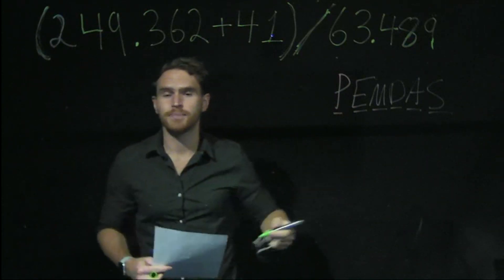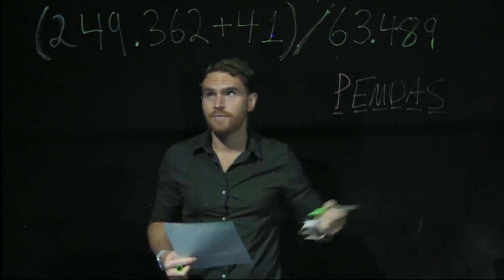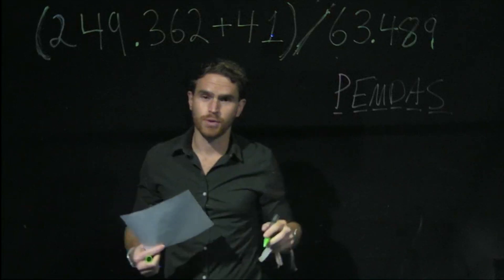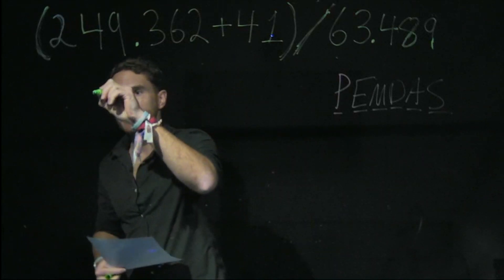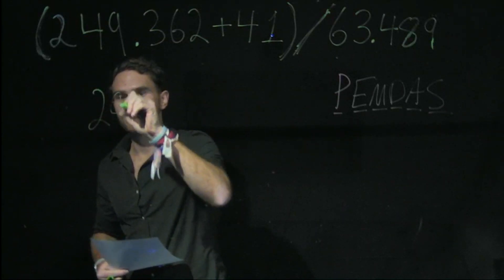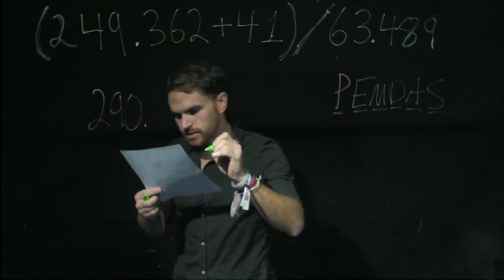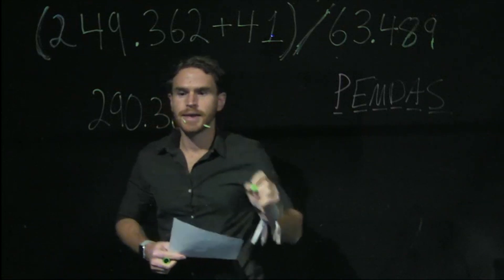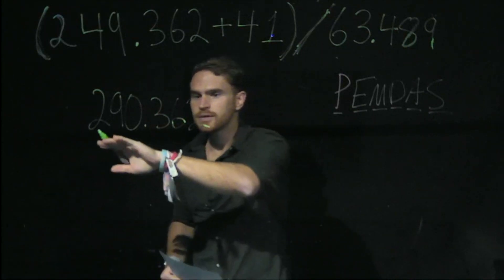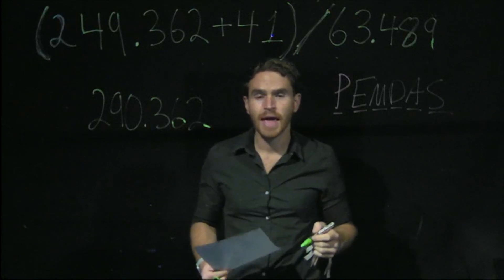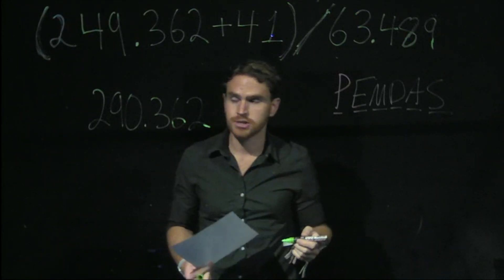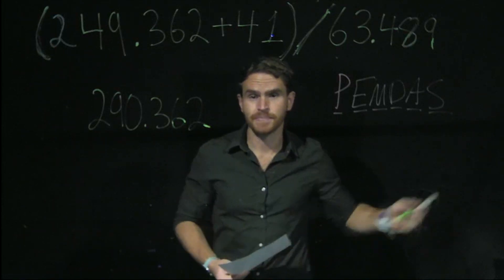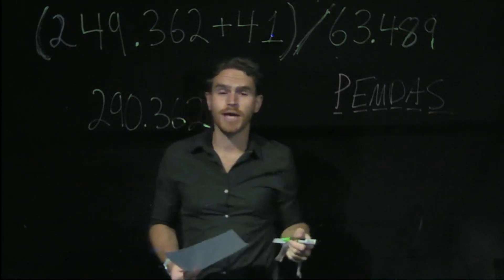In 249.362, we have 6 significant digits, and we're going to add that to 41 first because it's contained within parentheses. When we perform that calculation, you get a value of 290.362. Now we need to figure out how many of these new figures are actually significant. The rule for addition and subtraction is that you keep the least number of decimal places.